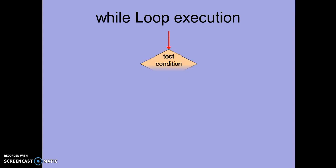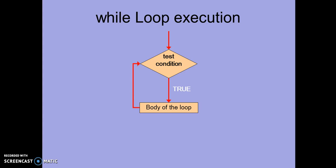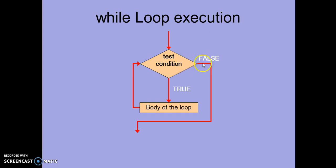Let's have a look with the help of a flowchart. Firstly, the condition is tested. If the condition is true, the body of the loop is executed, and once all the statements are executed it will return back to the test condition. If the condition is still true, it continues to execute the loop. Once the condition becomes false, you are taken out of the loop and the next statement after the loop is executed.